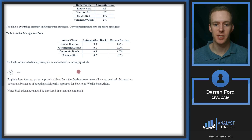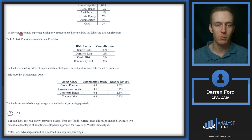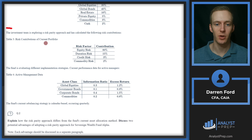Question two: explain how the risk parity approach differs from the fund's current asset allocation method. Discuss two potential advantages of adopting a risk parity approach for sovereign wealth fund alpha — each advantage should be discussed in a separate paragraph. The investment team is exploring a risk parity approach and has calculated the following risk contributions. Table three shows the risk contributions of the current portfolio.